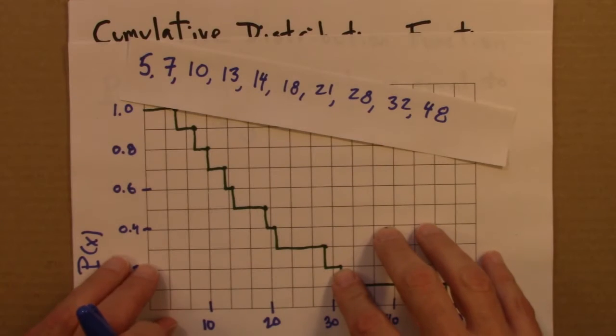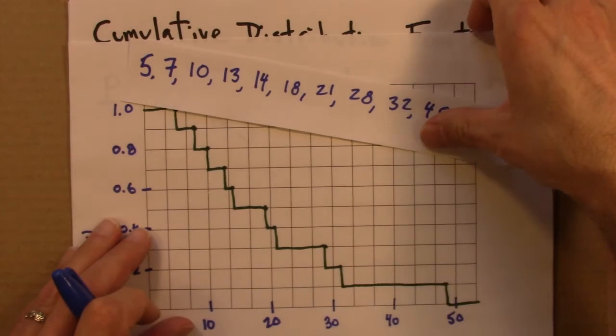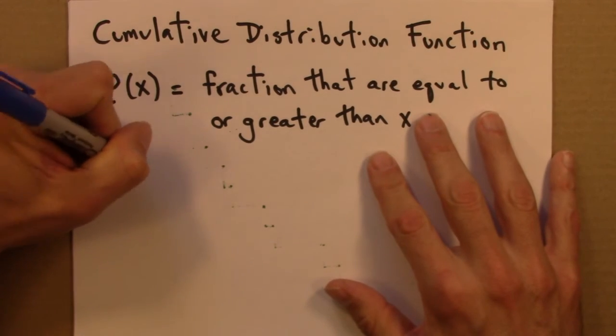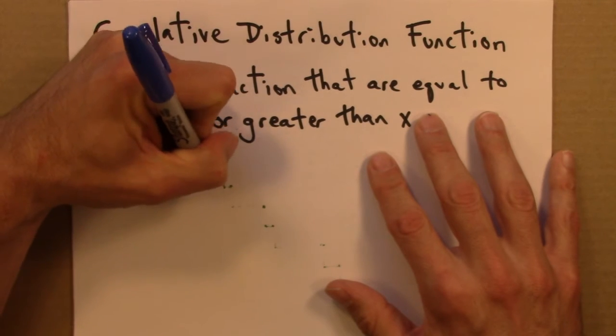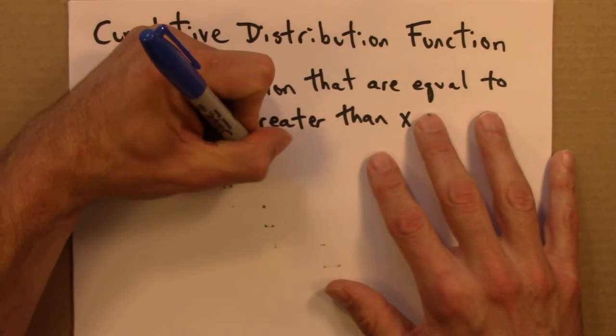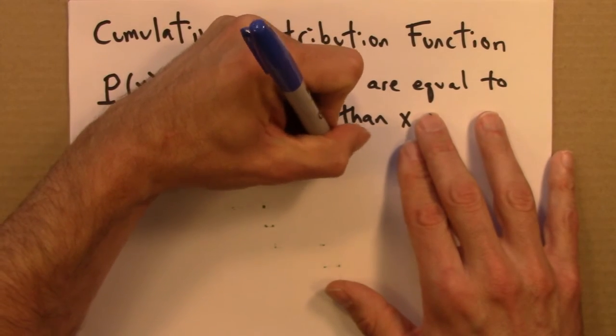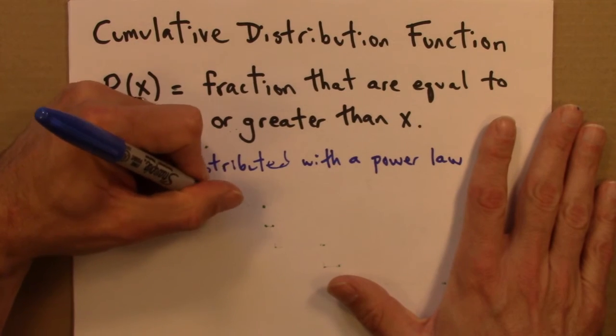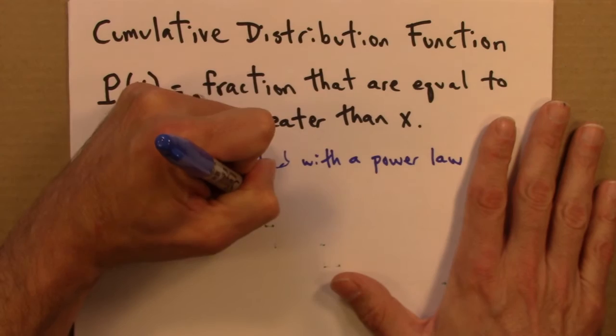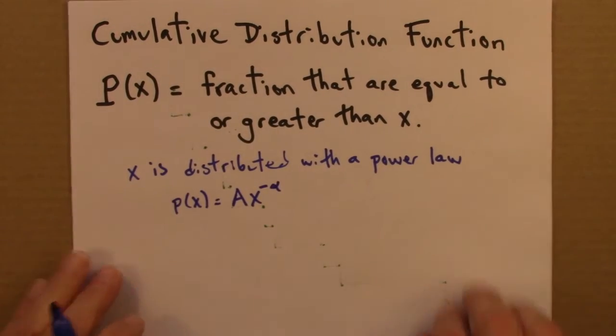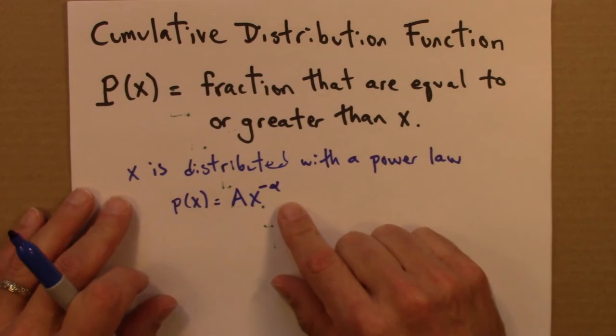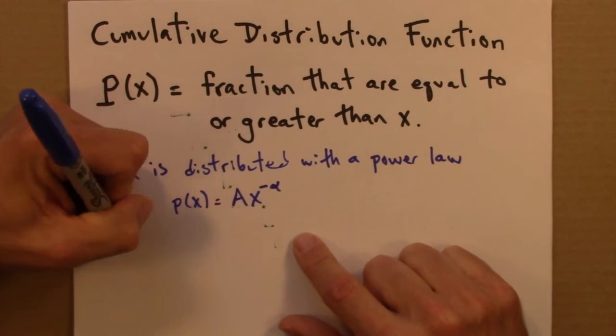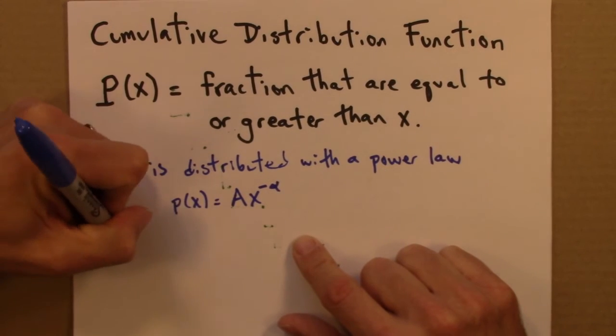So, let me say a little bit about cumulative distributions for power laws. So, let's suppose that x is distributed according to a power law. Then that means that little p of x is going to be a times x to the minus alpha. So, it turns out that if this is true, the cumulative distribution function is also described by a power law.